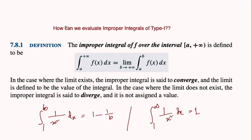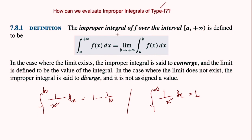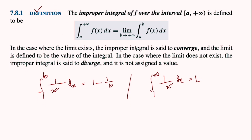In this video I will discuss how to evaluate an improper integral of type 1. To do that we need to know some definitions. The improper integral of a function f over an interval from a to infinity is defined using a limit. We know this integral is improper because of its upper limit.